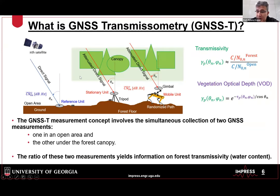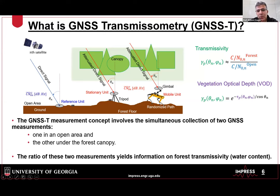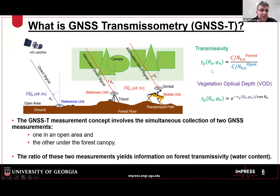GNSS transmissometry is a new way of doing this. It requires two simultaneous measurements: one in an open area with no obstruction as a reference, and one under the canopy — either on a stationary or mobile unit. Taking the ratio of the under-forest measurement to the reference gives approximately the transmissivity. From that ratio, using a simple relationship, you obtain the vegetation optical depth tau. There are errors associated with this approximation, which I'll discuss.